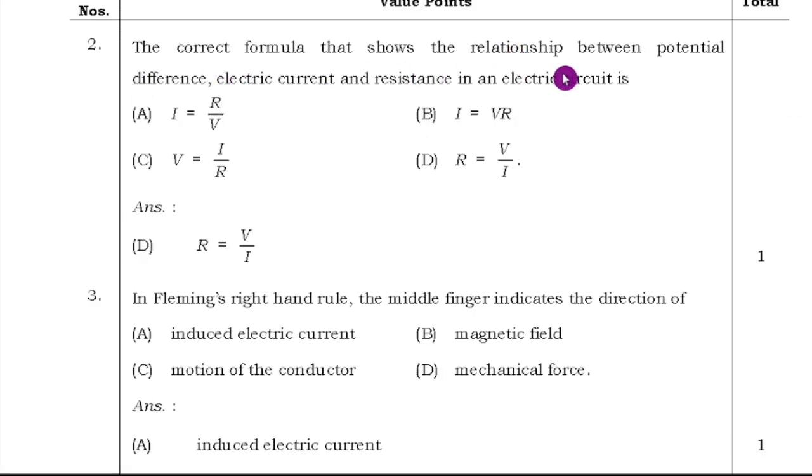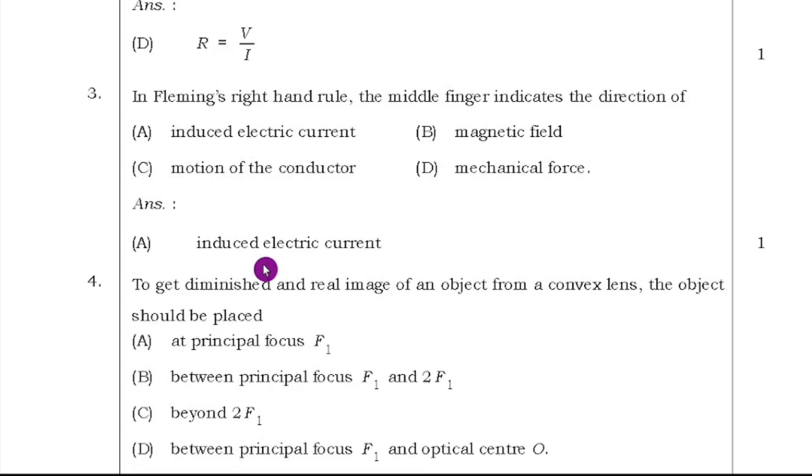The second question, the correct formula that shows the relationship between the potential difference and electric current and resistance in an electric circuit is R equals V by I. Third question, the Fleming's right hand rule. The middle finger indicates the direction of C and four options are there in that induced electric current is the right answer.